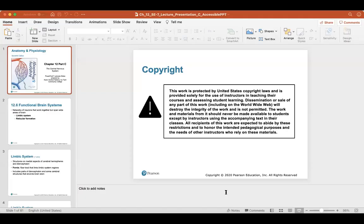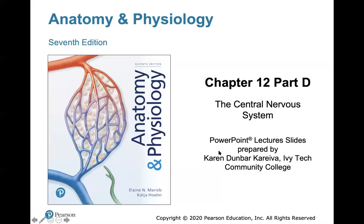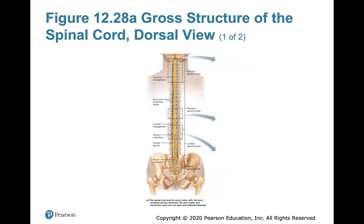That's part C. Now we'll quickly go through part D — the spinal cord. The spinal cord is enclosed in the vertebral column. Its functions are communication to and from the brain and the body, and it also functions as a major reflex center. Sometimes reflexes are initiated and completed at the spinal cord level — for example, if you step on a tack or touch a hot stove, the reflex to withdraw your hand or leg won't go up to the brain; it'll happen right at the spinal cord level.